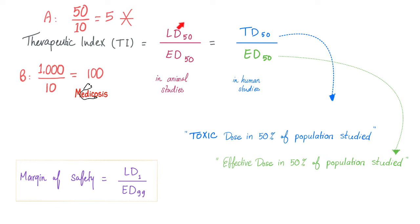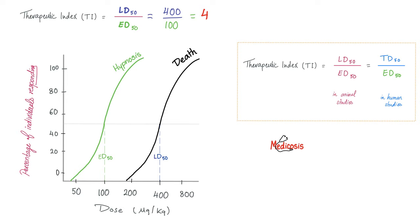We cannot raise the dose until we kill humans, so in human studies we replace the lethal dose with toxic dose — the dose at which 50% of the human population suffers toxicity, not death. There is also the margin of safety: lethal dose 1 over effective dose 99 — the lethal dose in 1% of the population over the effective dose in 99% of the population. For example, if response occurs at 100 micrograms/kg in 50% of mice and death occurs at 400 micrograms/kg in 50% of mice, the therapeutic window is 400 over 100 equals 4. Both numbers come from the x-axis, not the y-axis.